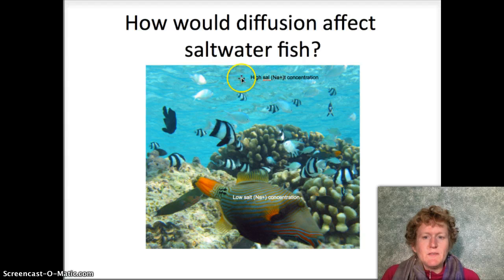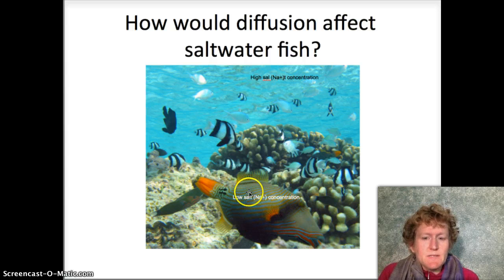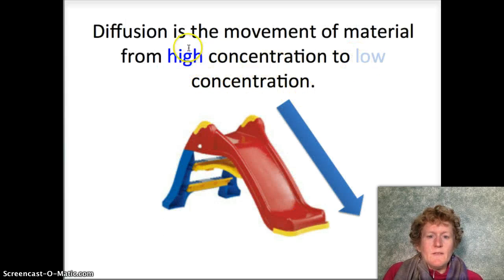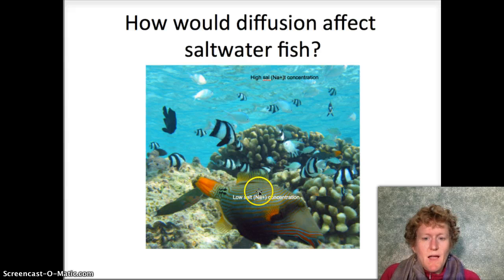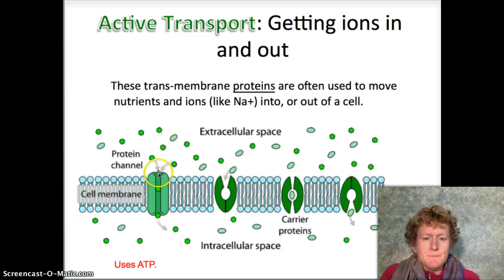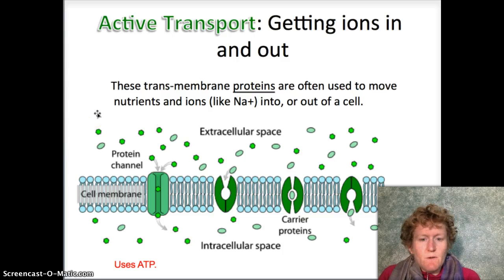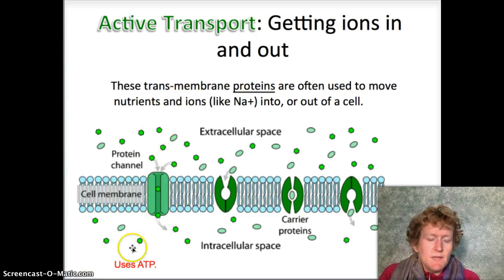Diffusion affects saltwater fish because the water outside has a high salt concentration, while inside the fish they maintain a low salt concentration. This is a problem because diffusion always moves sodium from the high salt concentration outside into the fish where there's low salt concentration. Remember, diffusion goes from high to low. So fish have to use energy — a protein channel, an ion pump, and ATP — using active transport to pump that sodium back out of their cells and maintain homeostasis.